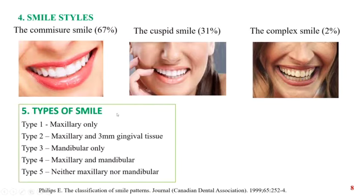Coming to the types of smile based on the amount of display, they are broadly classified as type 1 to type 5. Type 1 exposes only the maxillary teeth; type 2 exposes the maxillary teeth and 3 mm of the gingival tissue; type 3 exposes only the mandibular teeth; type 4 exposes both the maxillary and mandibular teeth; and type 5 exposes neither the maxillary nor the mandibular teeth.